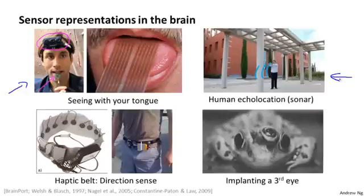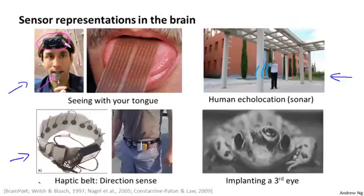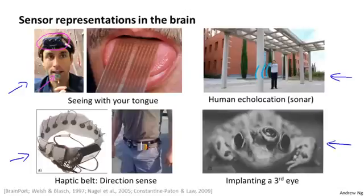A third example is the haptic belt. If you have a strap around your waist with a ring of buzzers, and always have the northernmost one buzzing, you can give a human a direction sense similar to how birds can sense where north is. And in a more bizarre example, if you plug a third eye into a frog, the frog will learn to use that eye as well. It's pretty amazing to what extent you can plug almost any sensor into the brain and the brain's learning algorithm will figure out how to learn from and deal with that data.